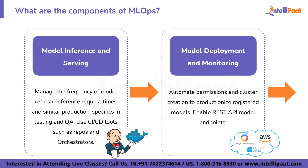Fifth is model inference and serving. We have to manage the frequency of model refresh, inference request times, and similar production specifics. In testing and QA, we use CI/CD tools such as repos and orchestrators to automate the pre-production pipeline.